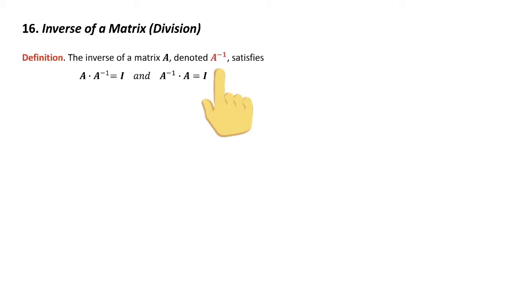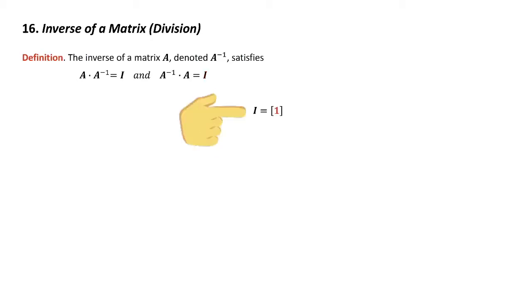It has to satisfy these two relationships. Remember, matrix multiplying on the left isn't the same as the right. The I here is the matrix version of 1. For a 1×1 matrix it looks like this, for 2×2 it looks like this, for 3×3 it looks like this. Notice this is what we got when doing Gauss-Jordan elimination — this is the pattern we were looking for. So that's the matrix version of 1.